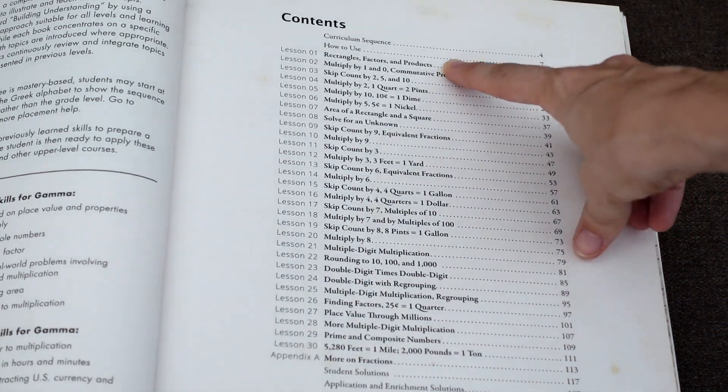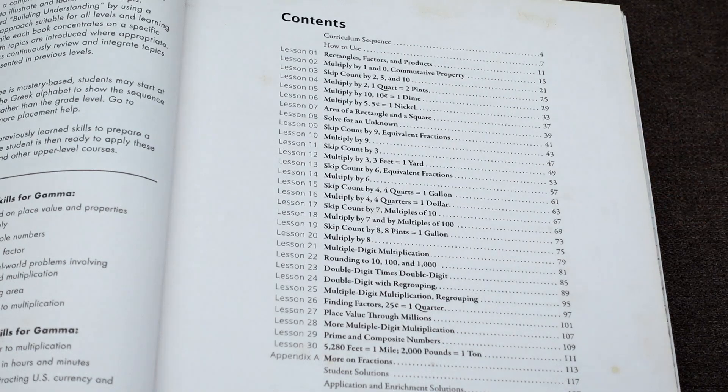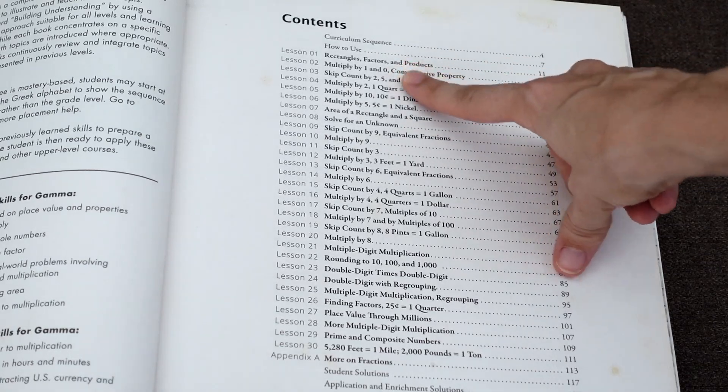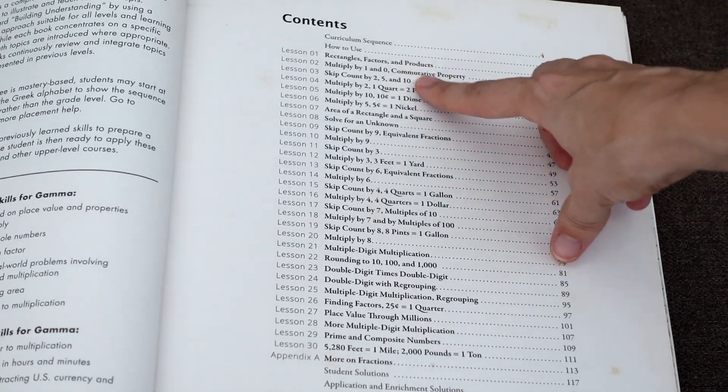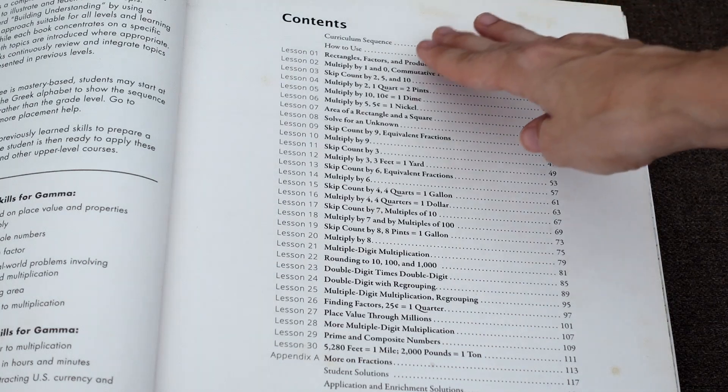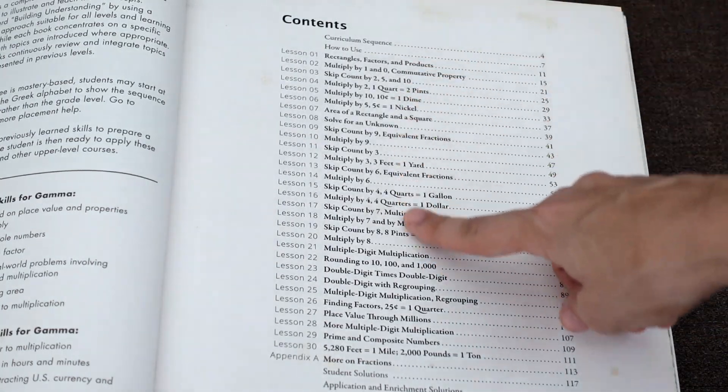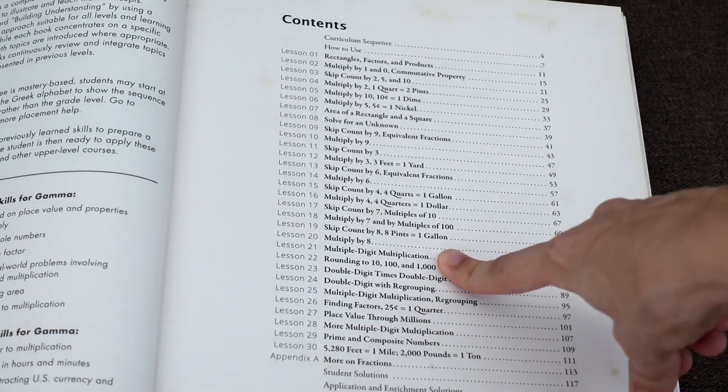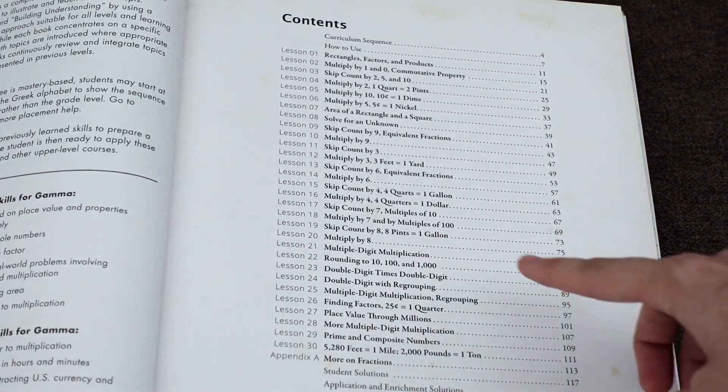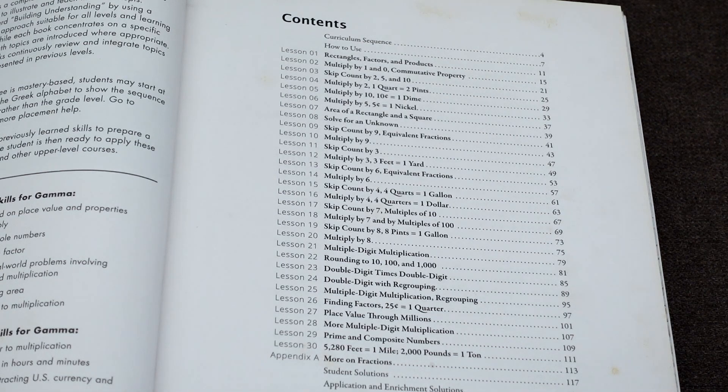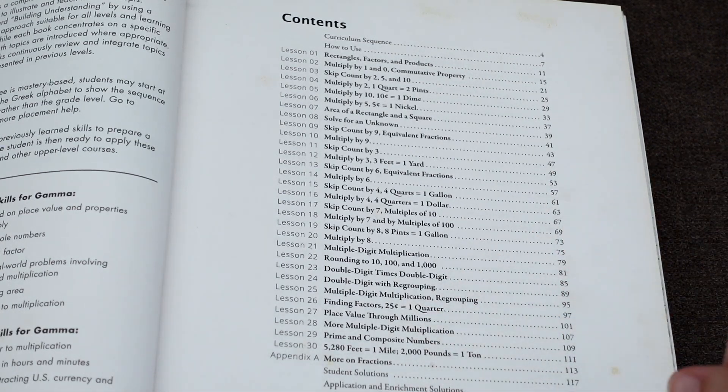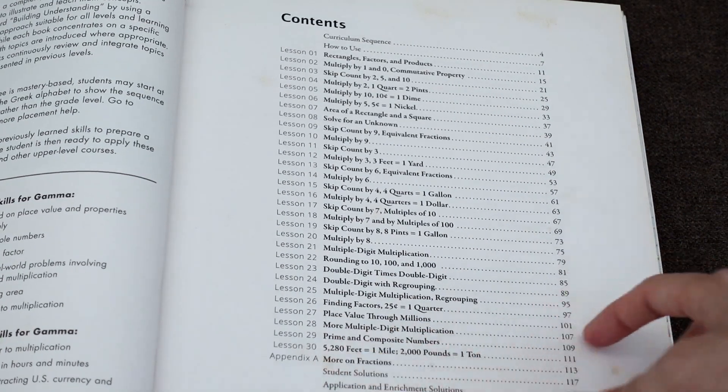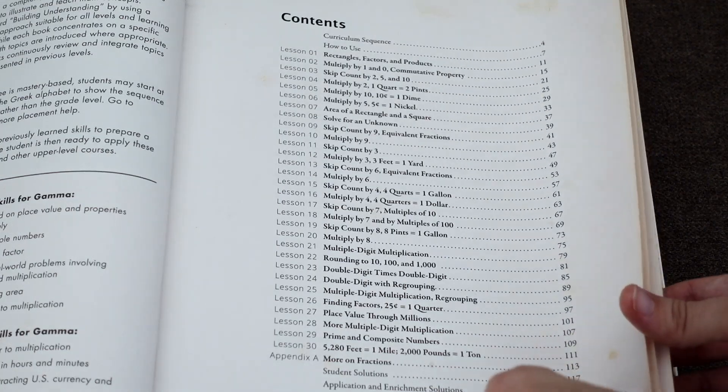So you can see some of the topics: rectangles, factors, and products. So we're introducing multiplication right off the bat, looking at rectangles. We learn some of the easiest factors to multiply by 1, 0s, 2, 5, 10 toward the beginning, and you just go through and learn all your multiplication. Multiply by 9, 6, 7, 8. Then we start learning multiple digit multiplication. We do learn rounding. We do a lot of practice with rounding. Some work with place value. There's some fractions in here, some measurement work, prime numbers. Oh, that's interesting.